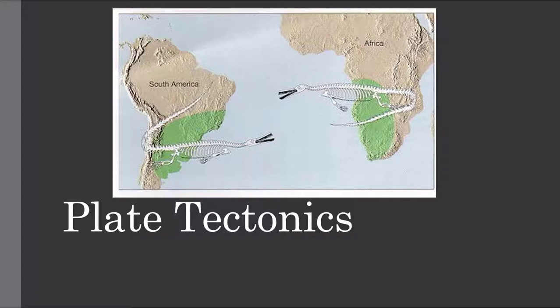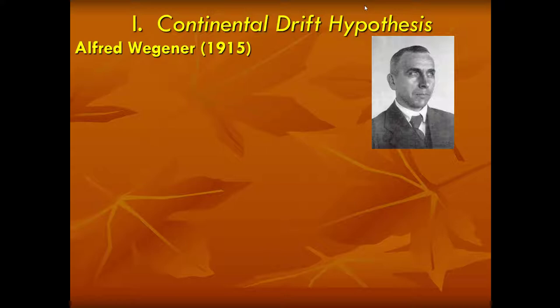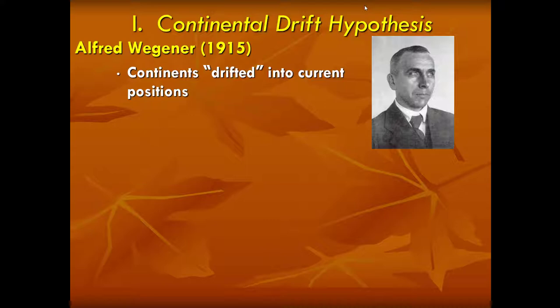One of the first observations that led to the development of this theory was something you may have noticed as a kid looking at a globe — the east coast of South America and the west coast of Africa seem to fit together just like puzzle pieces. That was one of the observations of Alfred Wegener in 1915. Wegener developed what's called the Continental Drift Hypothesis: the idea that continents have drifted into their current positions, having plowed their way around ocean basins.